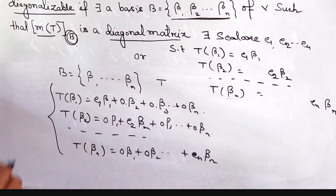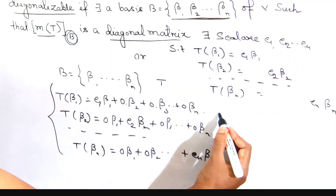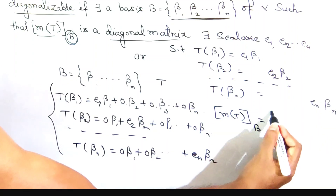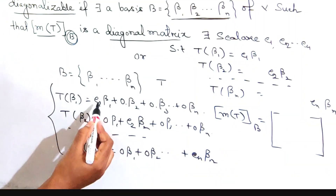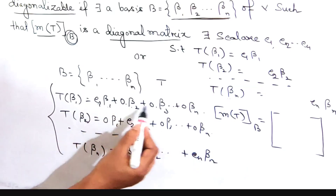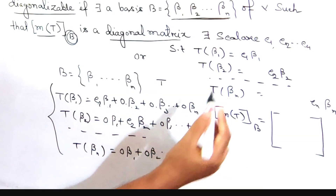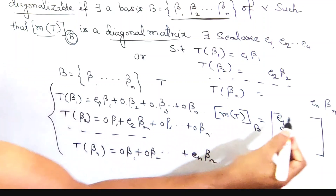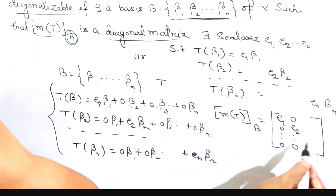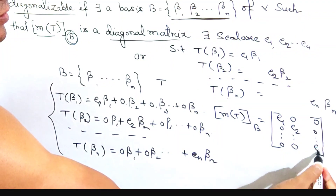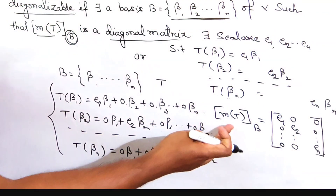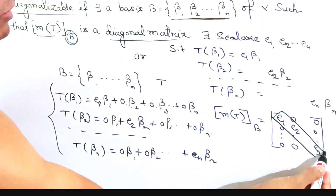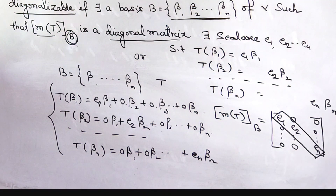From this relation, we can write the matrix of T with respect to basis B by reading off the coefficients of β1, β2, ..., βn. The first column is [C1, 0, 0, ..., 0], the second is [0, C2, 0, ..., 0], and the last column ends in Cn. So we prove the matrix is diagonal, and the diagonal elements are the eigenvalues of T.